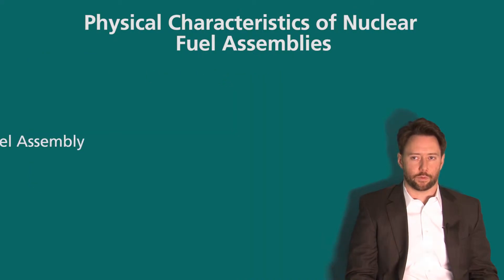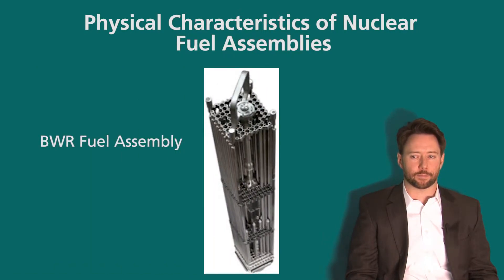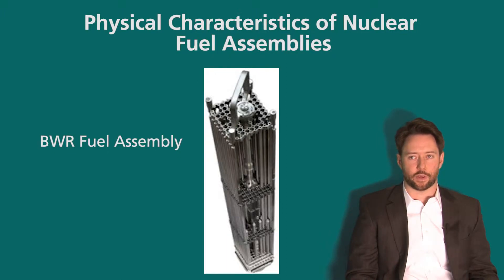Next we'll take a look at a boiling water reactor, or BWR, fuel assembly. Here we have an illustration with some of the central rods moved out so you can see within. You see several grid plates and the fuel rods moving down. There are no control or guide rods within these BWR assemblies. Control in a BWR is done with an external control rod or a cruciform control assembly that goes between the fuel assemblies.